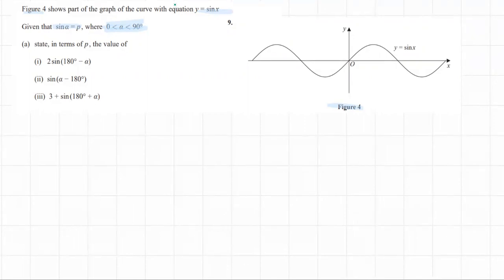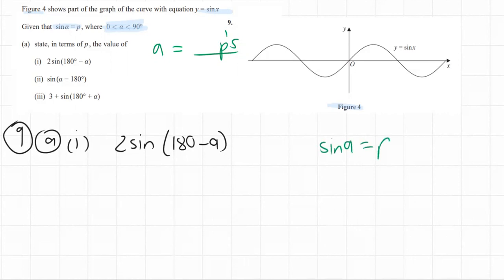State in terms of p. In terms of p just means that you'll have something with an a on one side and something with p's in it on the other side of the equal sign. So we have question 9a(i) which is 2 sine 180 minus a, and you want it in terms of p.